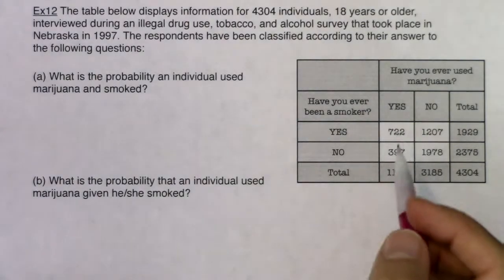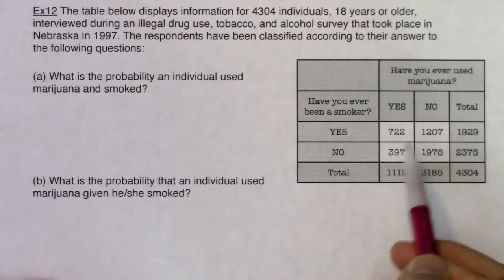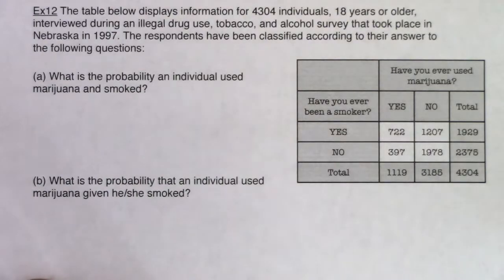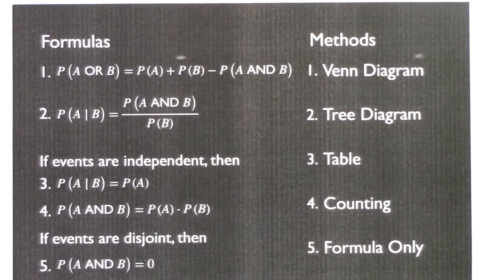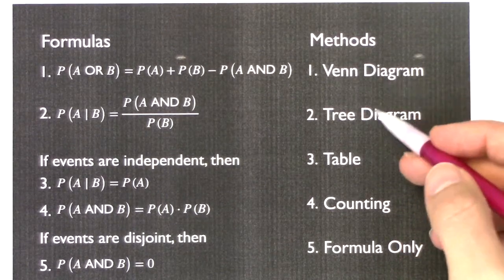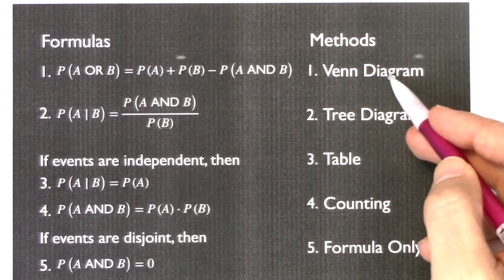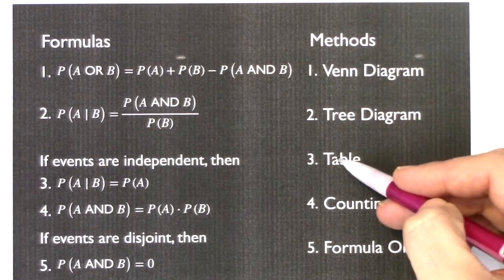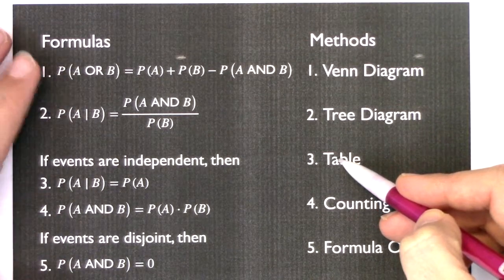You can see where they fall into: they did both, they did neither, they just smoked cigarettes, or they just smoked marijuana. In terms of the method, I love these types of problems because they're the easiest to identify. I was given a table, so I don't even have to worry — was it a Venn, was it a tree, counting formula? This is definitely a table problem.